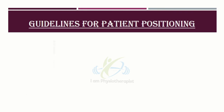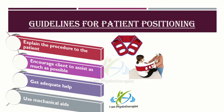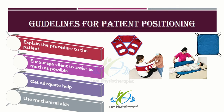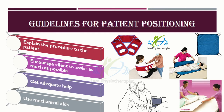Guidelines for patient positioning: Explain the procedure to the patient — provide explanation to the client on why their position is being changed and how it will be done. Encourage the client to assist as much as possible; determine if the client can fully or partially assist. Clients that can assist will save strain on the therapist. Get adequate help when planning to move or reposition the client; ask help from other caregivers. Positioning may not be a one-person task. Use mechanical aids — bed boards, slide boards, pillows, patient lifts and slings can facilitate ease of changing positions.